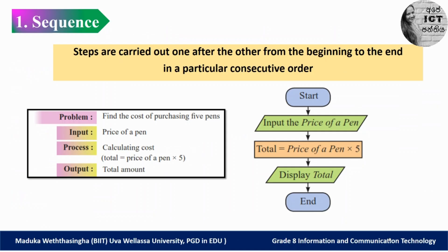We have to take the input from the user. When we get the input from the user, we have to store that value in a variable. Why do we use a variable? We use a variable to store some value. If you don't know about variables, please go to my grade 7 lesson video series for a good understanding. Here, we need two variables: one to store the price of a pen, and another to store the total value. Always the total value depends on the price of a pen, and these two values change at every execution.